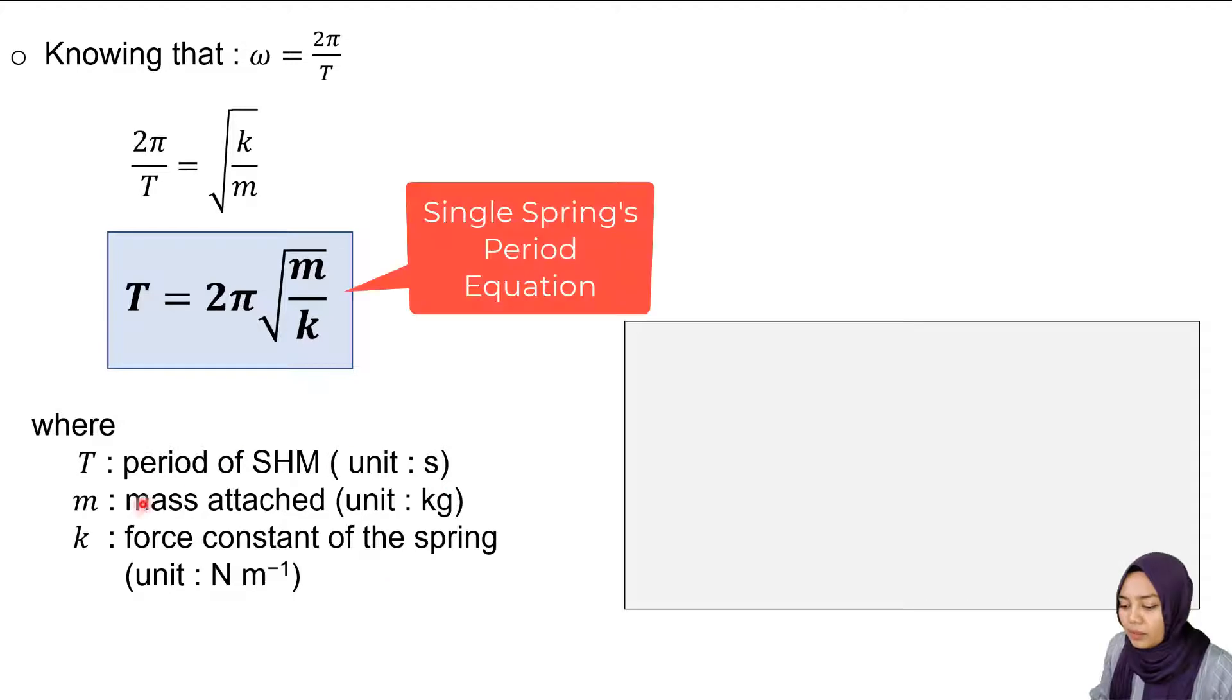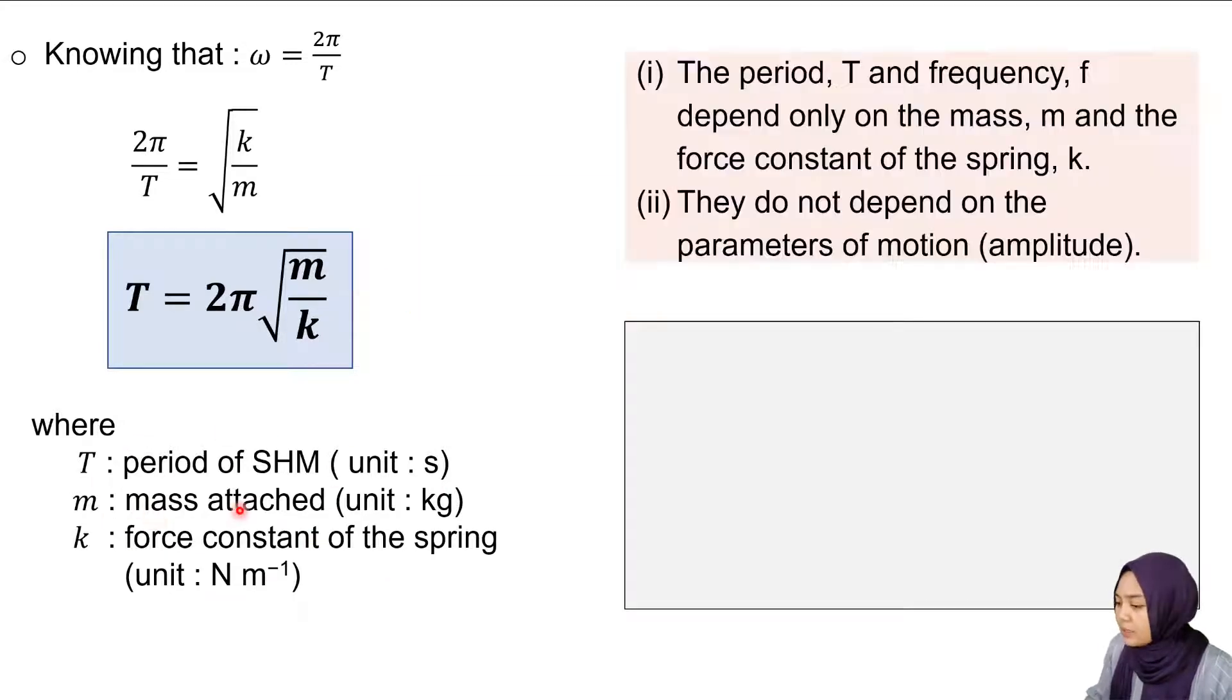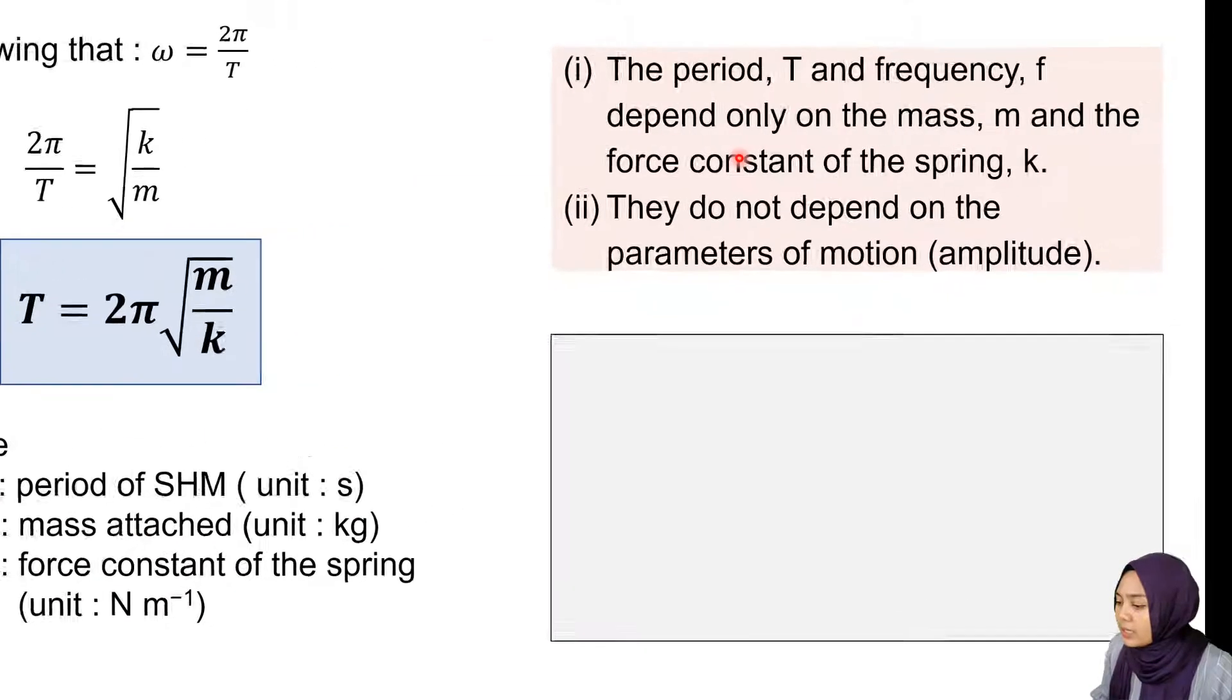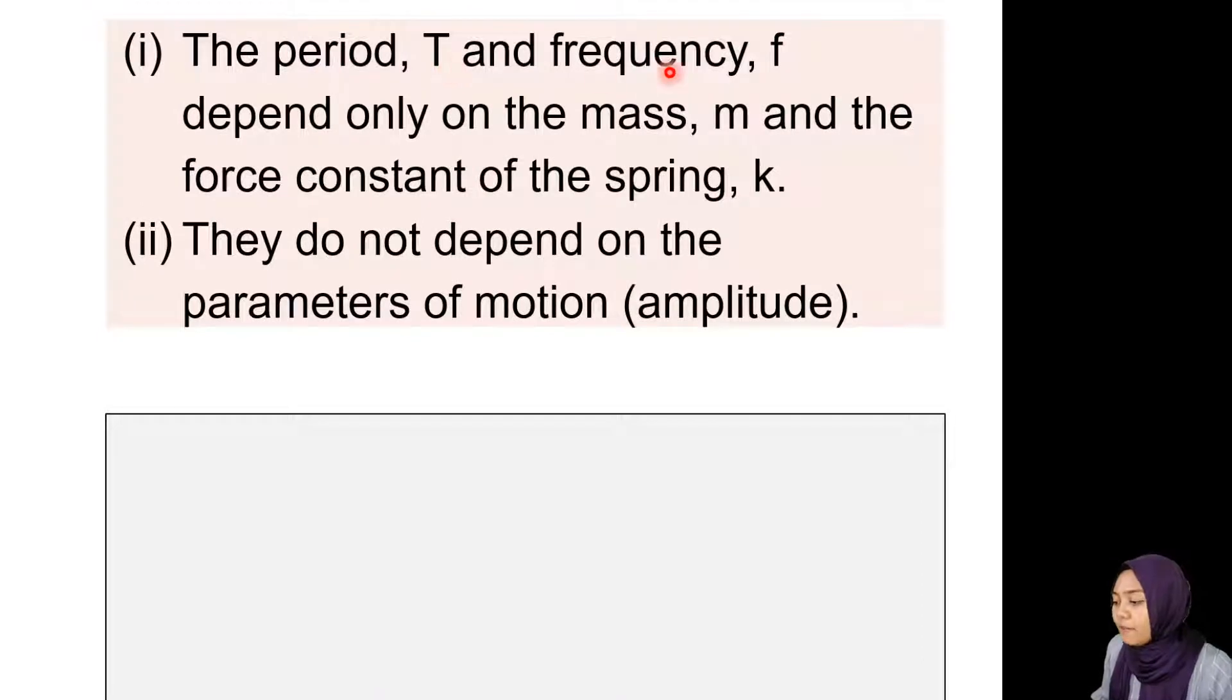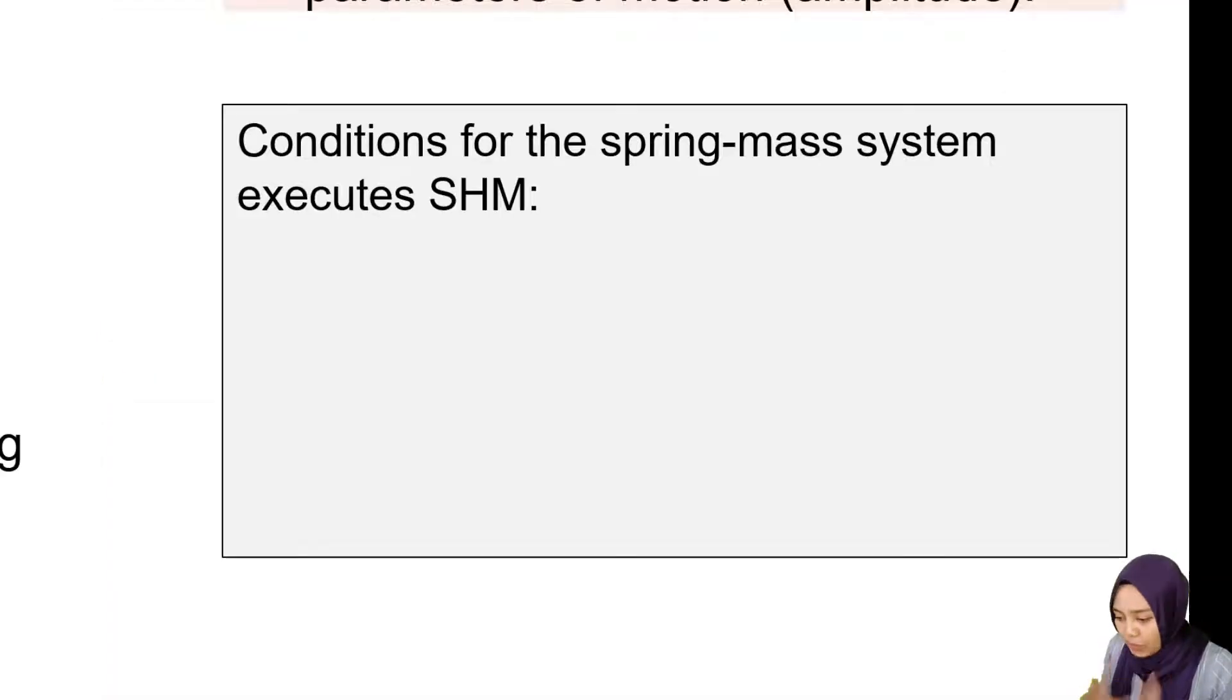The period T and frequency f only depend on the mass and the spring constant. They do not depend on other parameters such as amplitude. But to make sure these equations can be used, we have to meet these conditions.